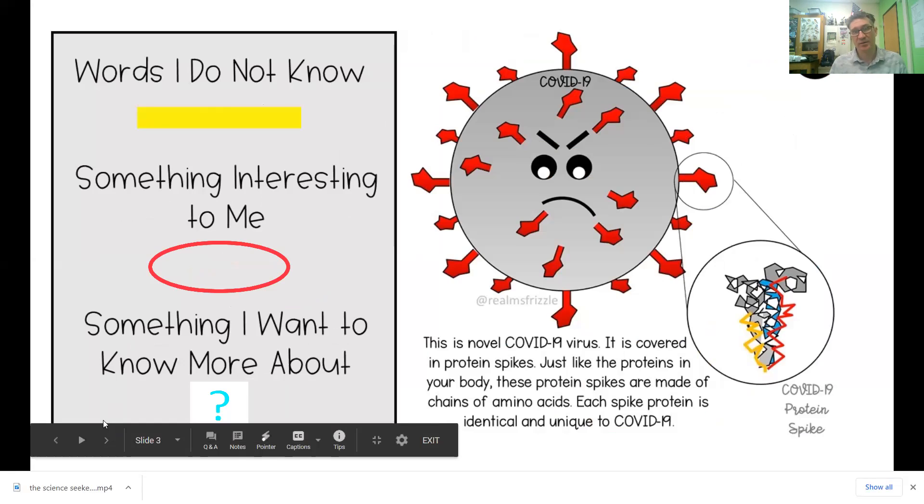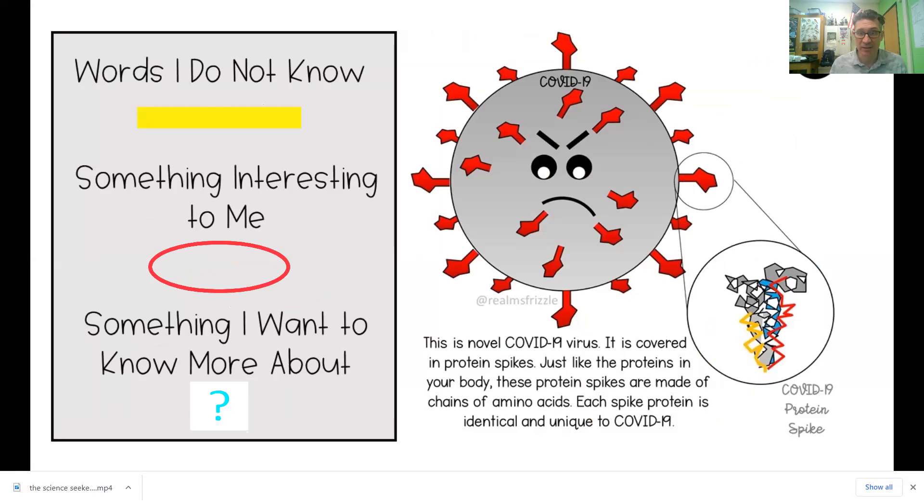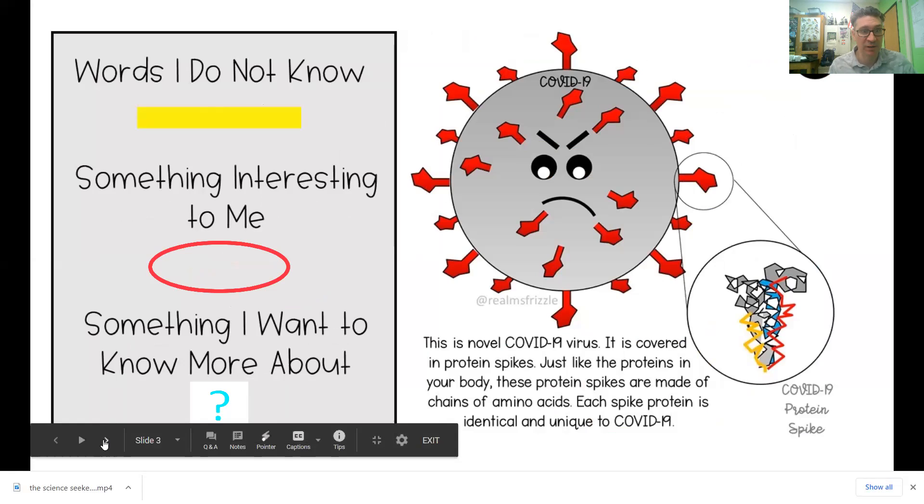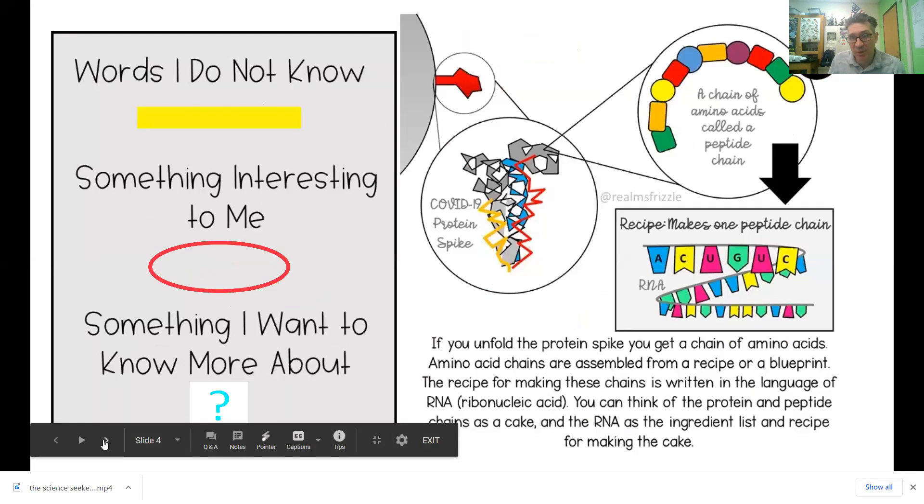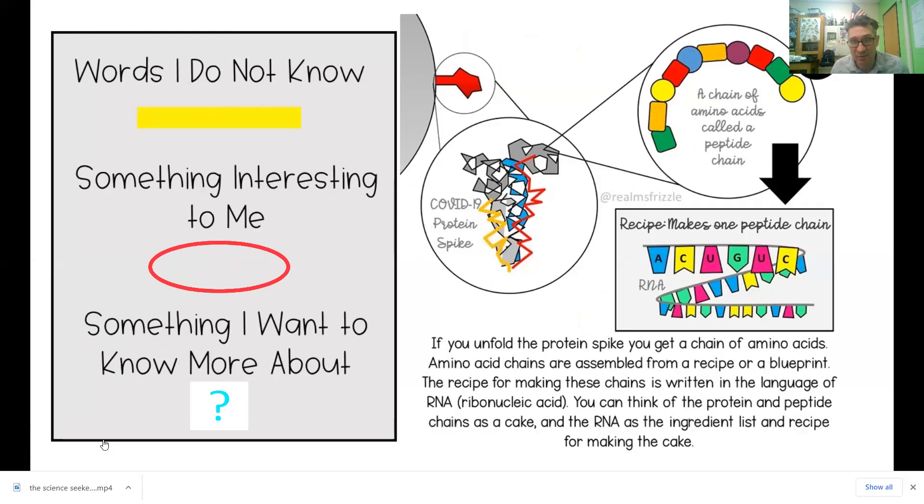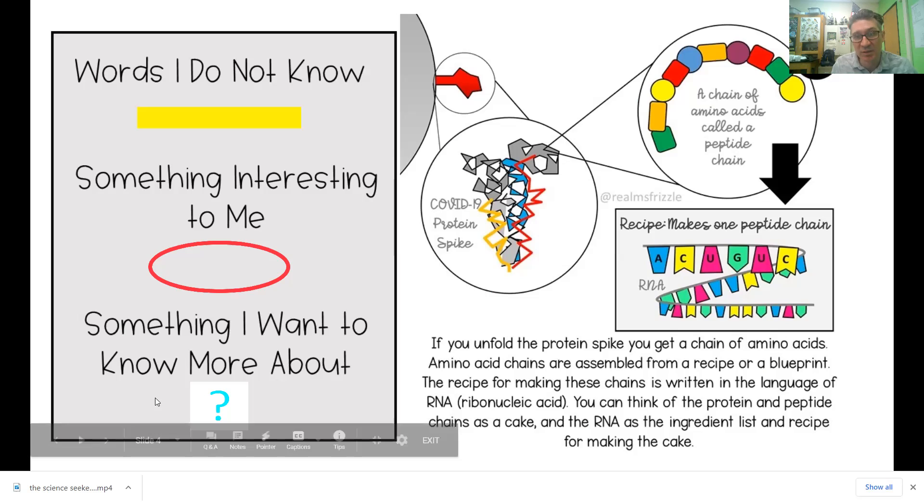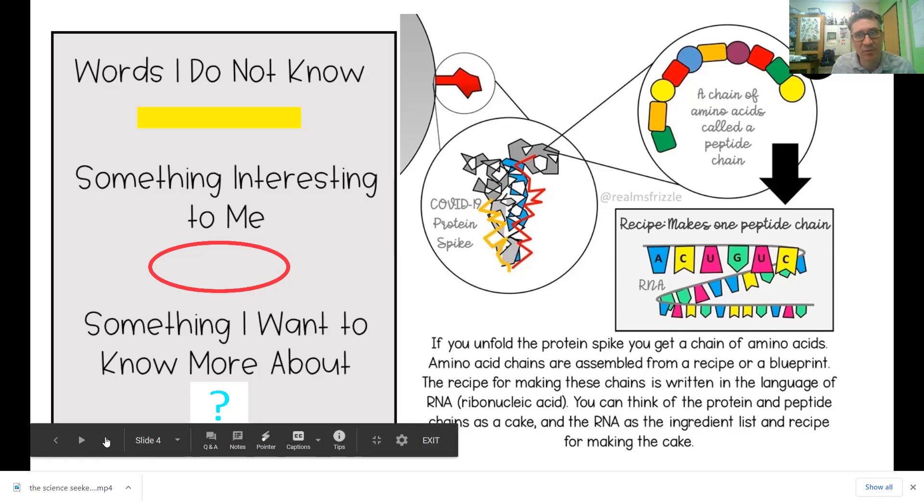This is the novel COVID-19 virus and it's covered in protein spikes, just like the proteins in your body. These protein spikes are made of chains of amino acids. Each spike protein is identical and unique to COVID-19. If you unfold the protein spike, you get a chain of amino acids. Amino acids are assembled from a recipe or blueprint. The recipe for making these chains is written in the language of RNA, which is very similar to DNA. You can think of the protein and peptide chains as a cake and the RNA as the ingredient list and recipes for making the cake, just like DNA is the recipe for making you.